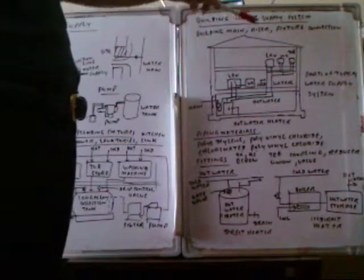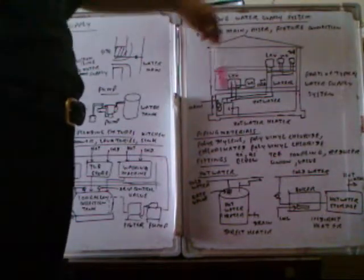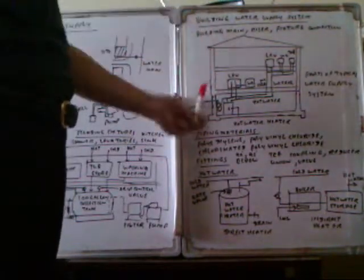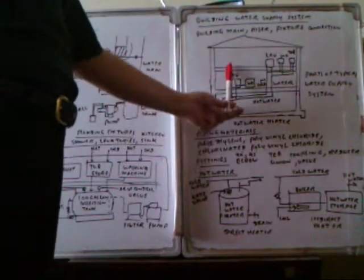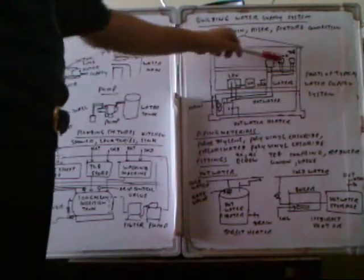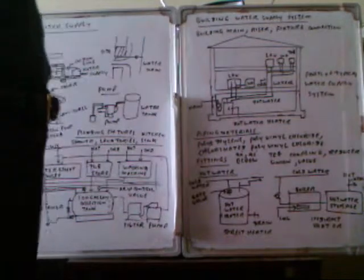The system includes the main line, riser, and fixture outlet. The main line brings water in, the riser distributes it vertically, and the fixture outlet delivers it to end points.